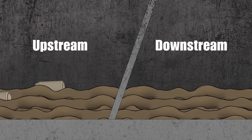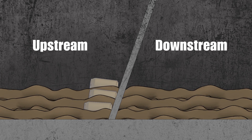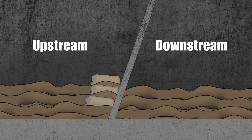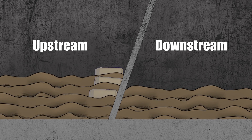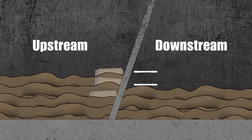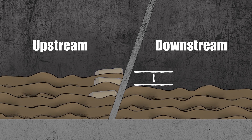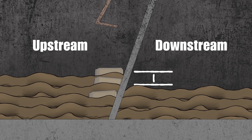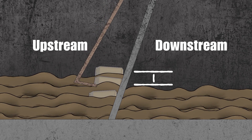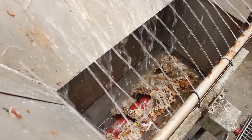Under normal operation, the bar screens run automatically based on pressure differential. When debris accumulates on a mechanical bar screen, the water level upstream rises due to the obstruction. The level sensors evaluate the increased upstream level relative to the downstream level. When the difference in the two water levels reaches the set point, the mechanical bar screen automatically starts. The screenings are discharged directly from the mechanical bar screens into the compactor feed hopper.